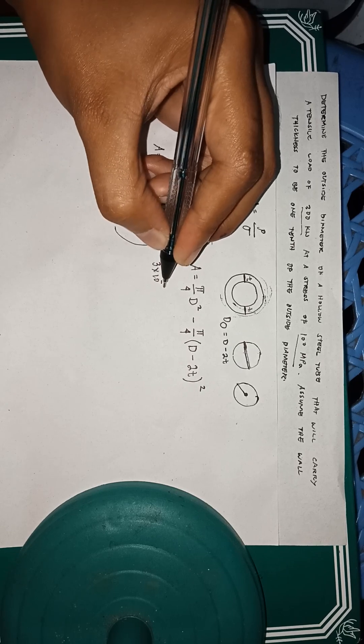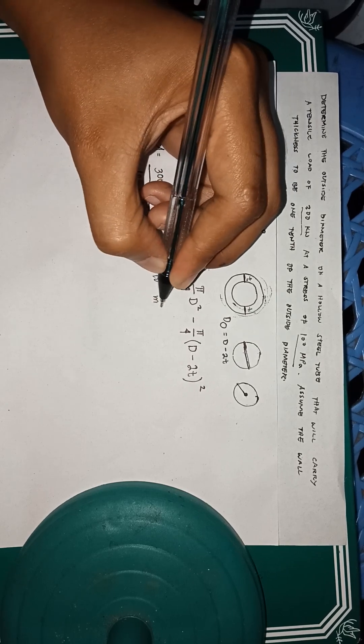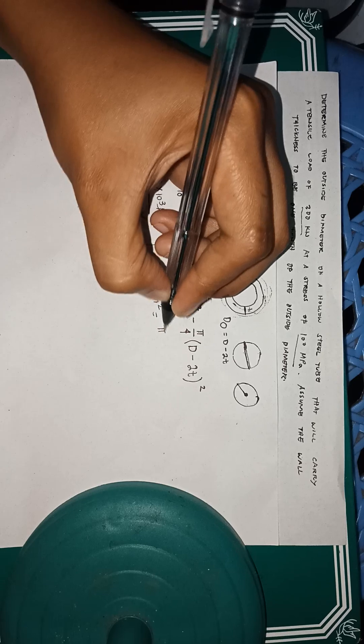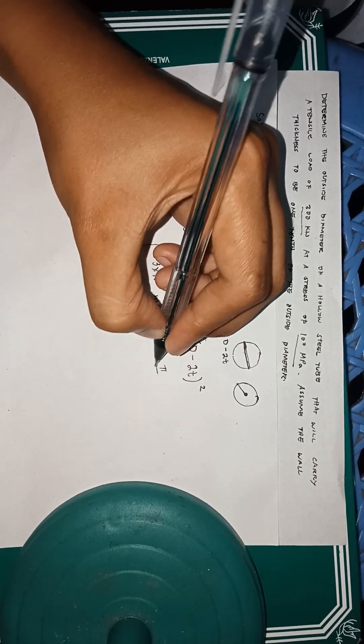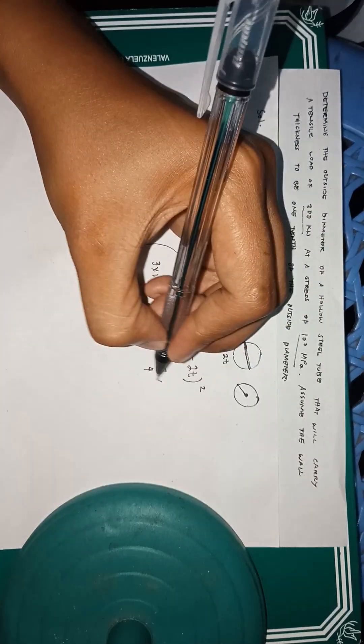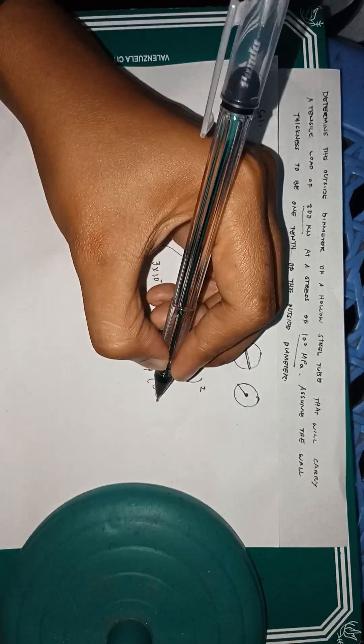That is our unknown for d minus 2, and our t thickness is 0.1d to the power of 2.